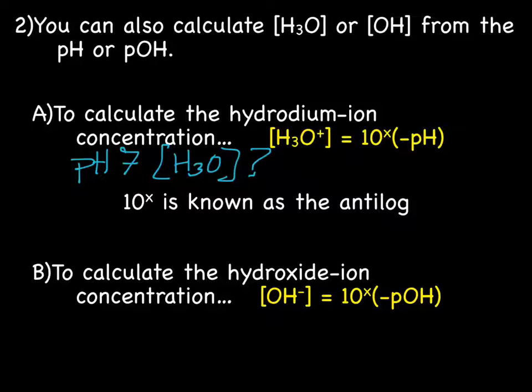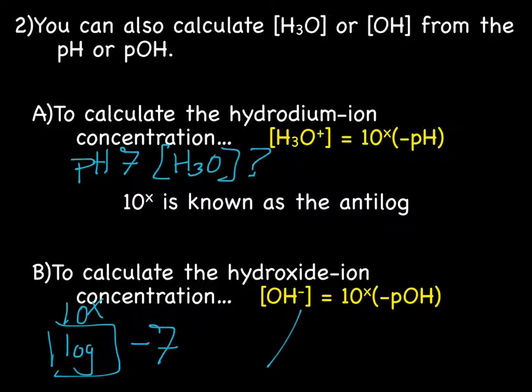So what you would put in your calculator is your 10 to the X button, except it's probably not a button, right? It's probably a shift key. So you have log, but what you're going to hit is your 10 to the X, and then you're going to hit the negative, and then you're going to hit 7. If you're working backwards, if you're a backwards sort of person, you're going to put in 7, then negative, and then your 10 to the X.